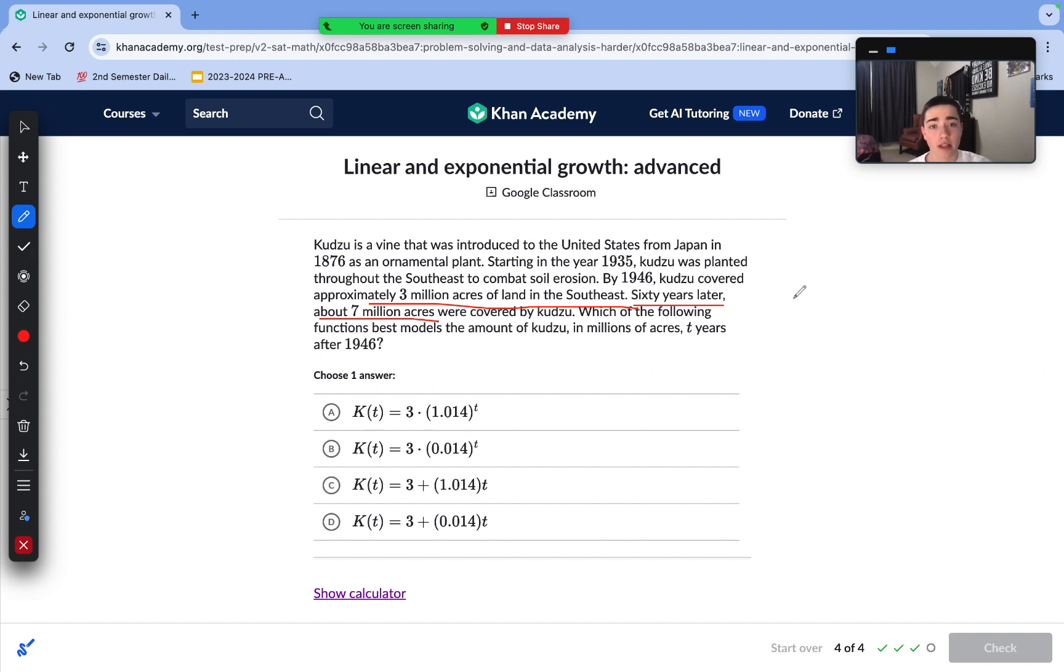So we have some values here that we need to consider. We have 0, 3 million, which we will represent by 3, as our amount of kudzu is just in millions of acres. So we have 0, 3. We start at 3, but then 60 years after, we are at 7. We need to see which relationship best models this.